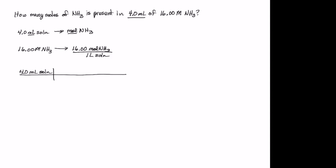Now, the next thing I notice is if I have volume and moles, I want to look at the molarity. But the molarity has liters as its unit of volume, not milliliters. So one of the first things I'm going to need to do is convert milliliters into liters. To do so, there's 1,000 milliliters in one liter. The milliliters are placed in the denominator so that the unit cancels out, leaving liters of solution.